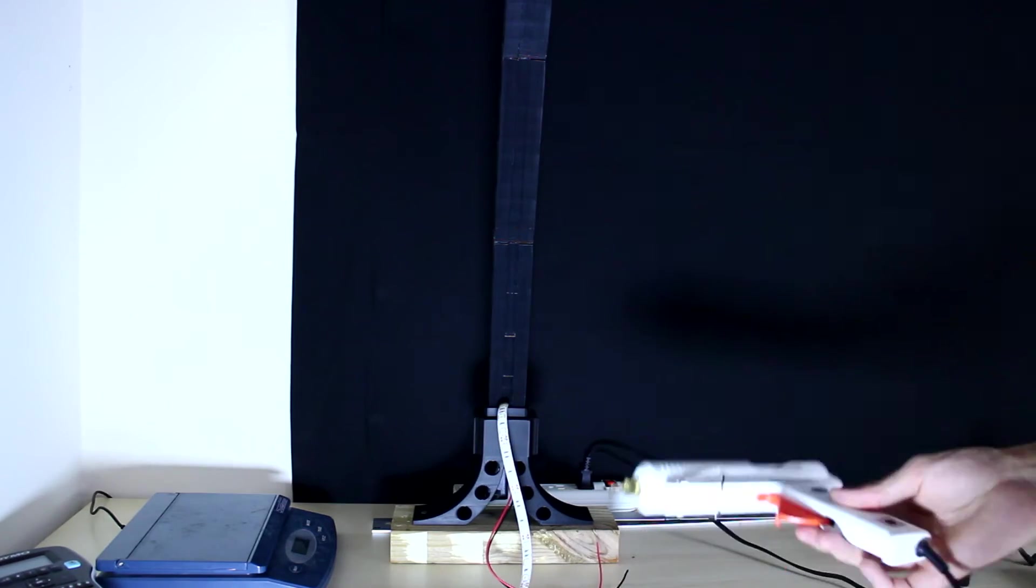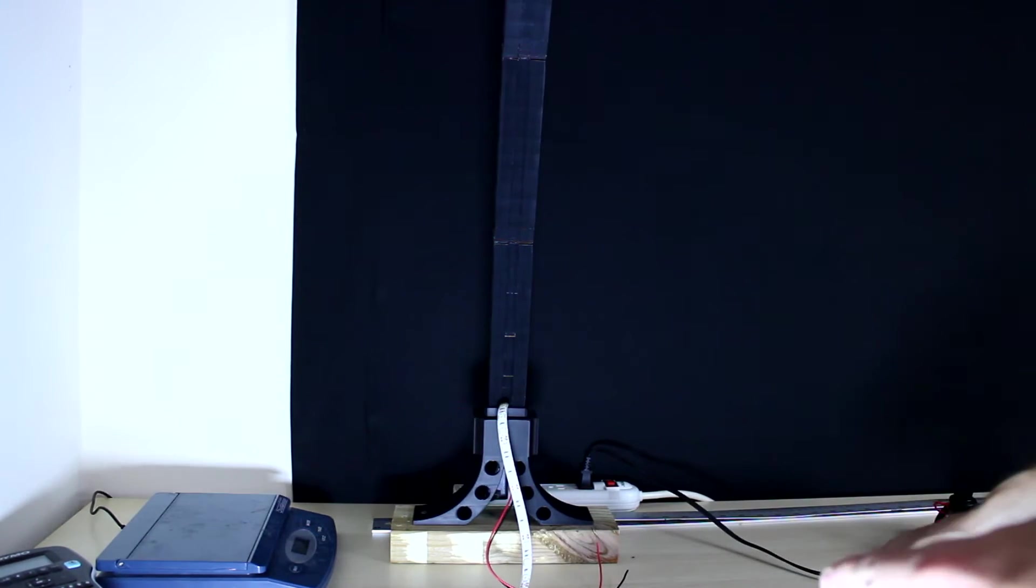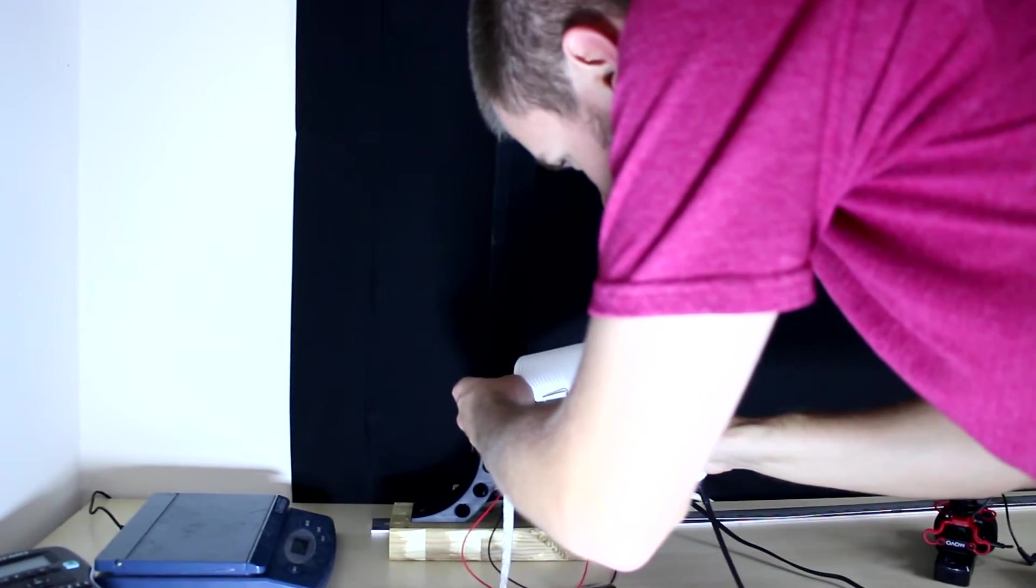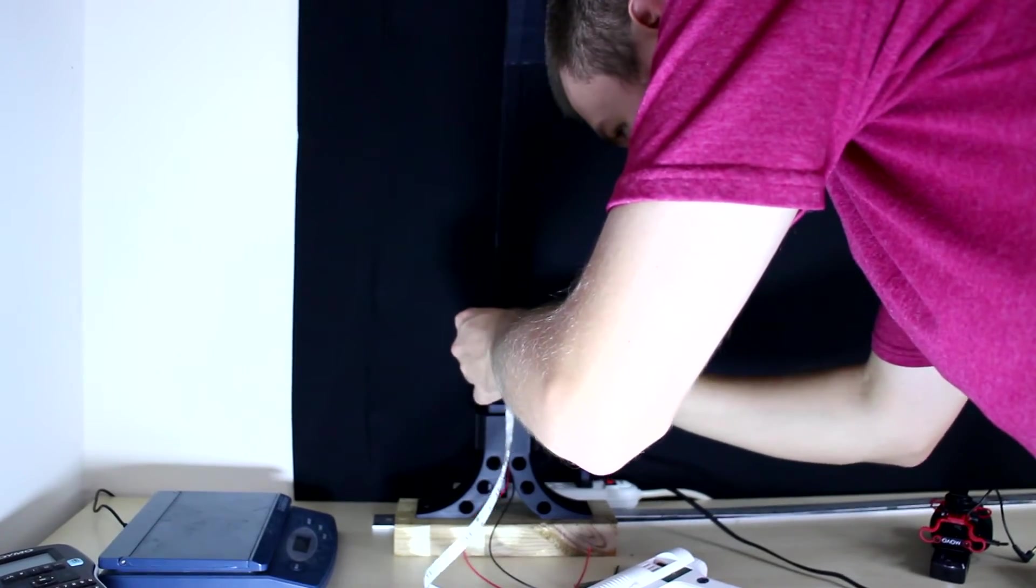Now it's time to go ahead and glue the LED strip to the actual pole here. I'm gonna do that here real quick. I'm just gonna do a little dab of hot glue every once in a while.